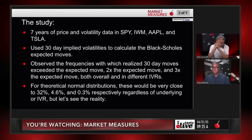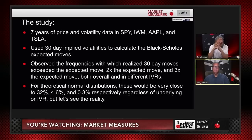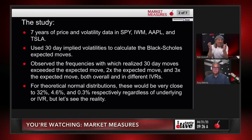We did a study — we looked at seven years of price and volatility data in SPY, IWM, Apple, and Tesla. We used 30-day implied volatilities to calculate the Black-Scholes expected moves. We observed the frequencies with which the realized 30-day moves exceeded one times, two times, and three times the expected move — overall, and then in different implied volatility environments: IVR less than 30, from 30 to 60, and over 60.